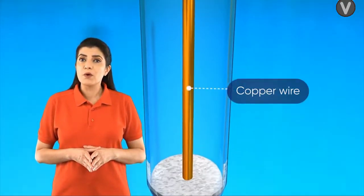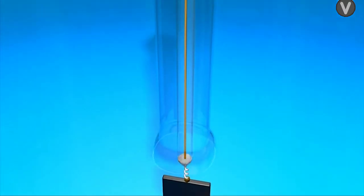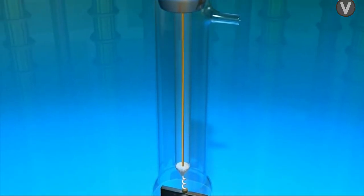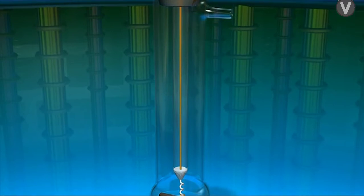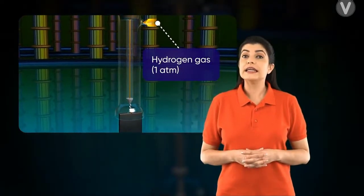A copper wire is dipped in the mercury for external contacts. This glass tube is enclosed by an outer jacket having a bell-shaped bottom.